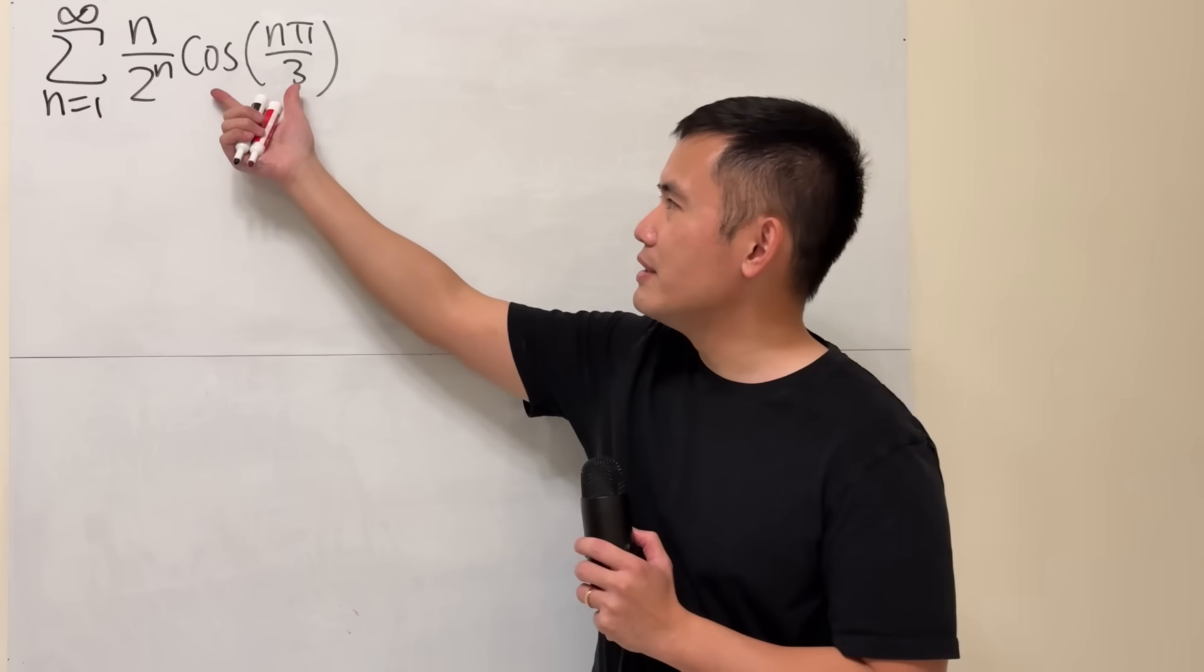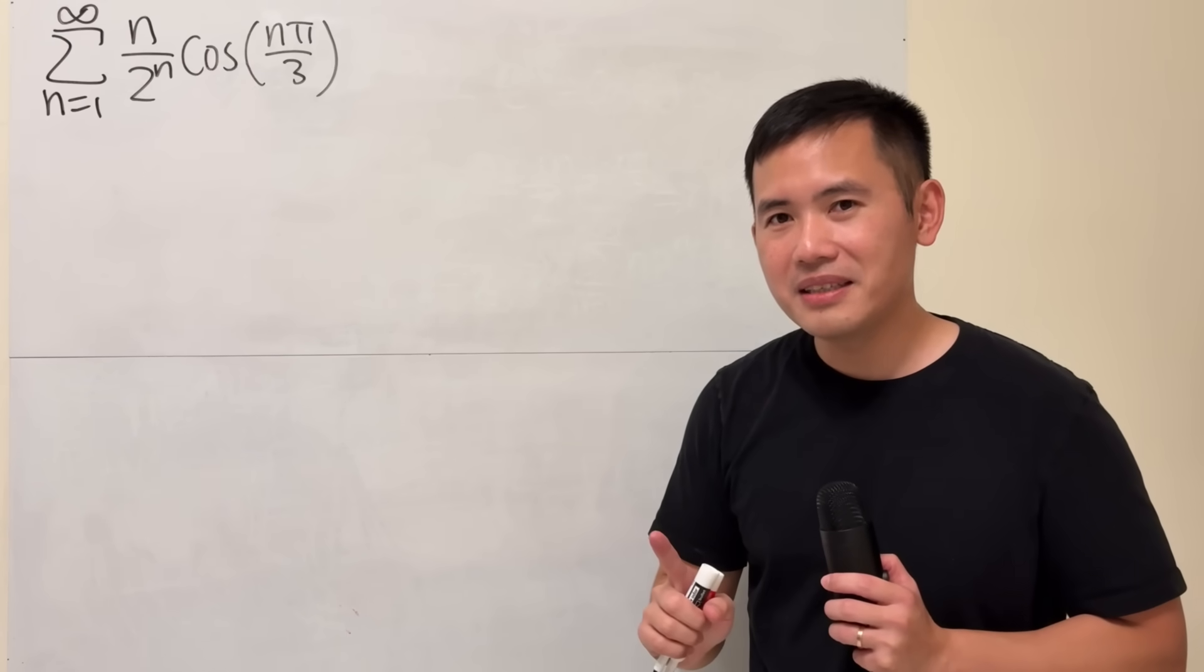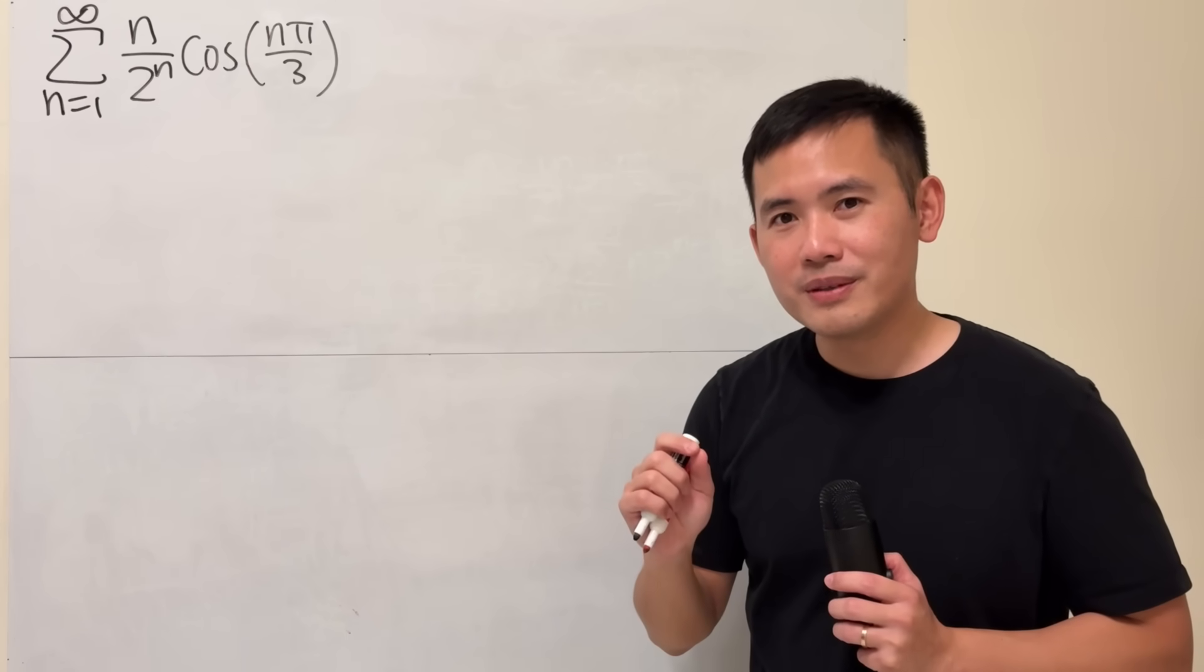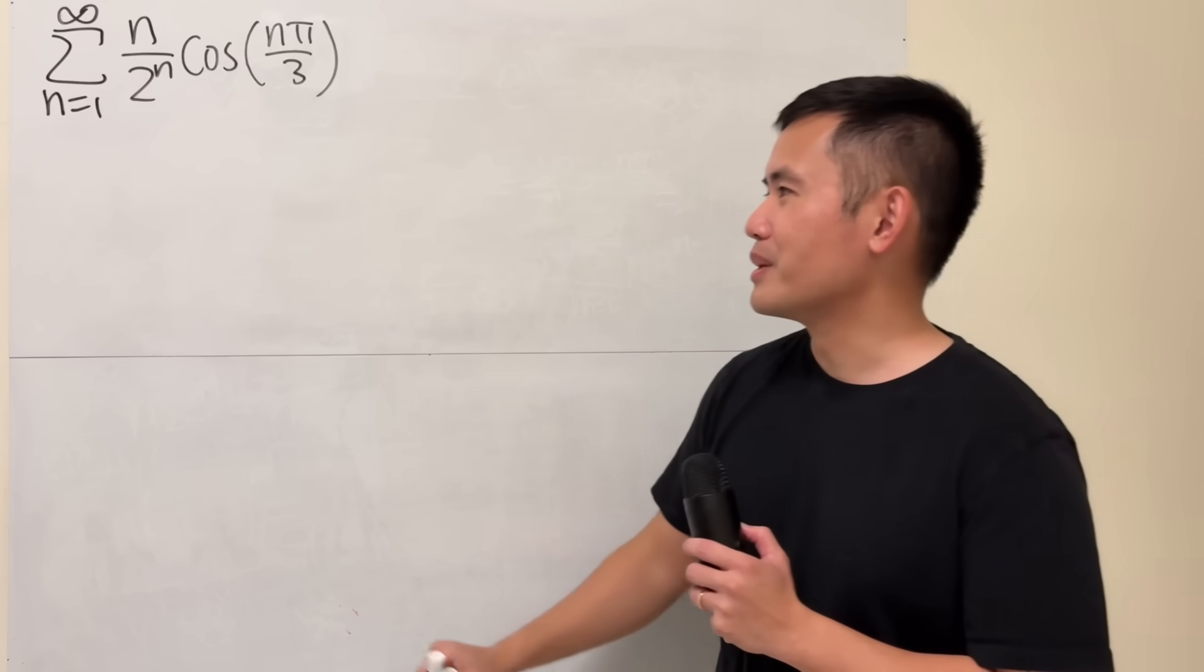However, here we do have this cosine part. So the idea here is that we will borrow complex numbers to help us out. Let me show you how we can do it.